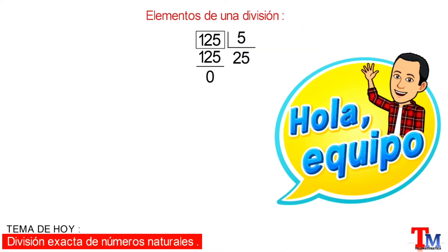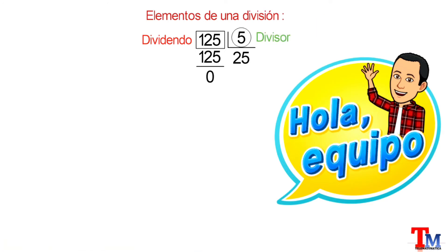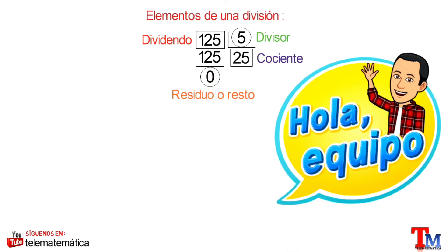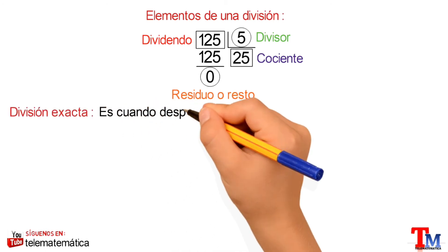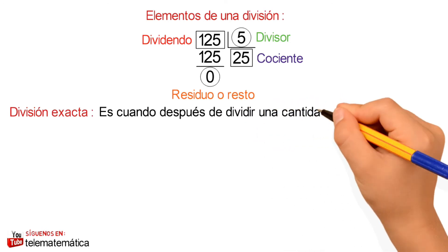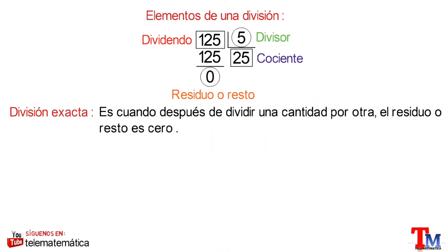En primer lugar tenemos el dividendo, en segundo lugar tenemos el divisor, en tercer lugar tenemos el cociente, y en cuarto lugar tenemos el residuo o resto. A continuación introduciremos el concepto de división exacta, que se define como cuando después de dividir una cantidad por otra el residuo o resto es cero.